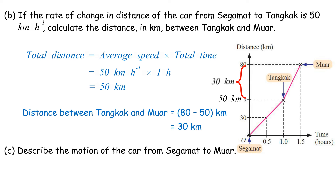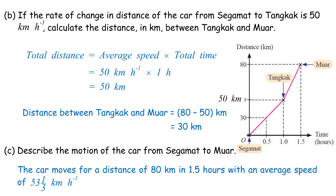C. Describe the motion of the car from Segamat to Muar. The car moves for a distance of 80 km in 1.5 hours with an average speed of 53 and one-third km per hour.